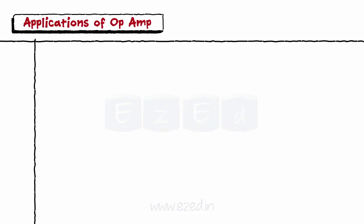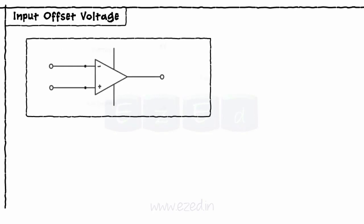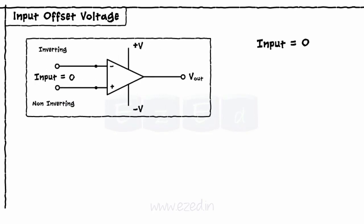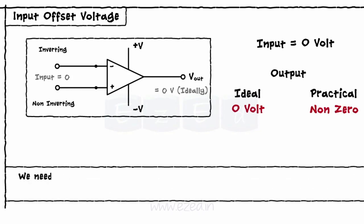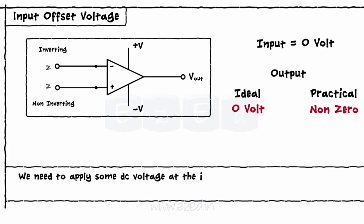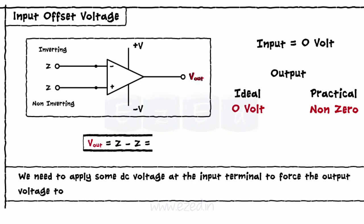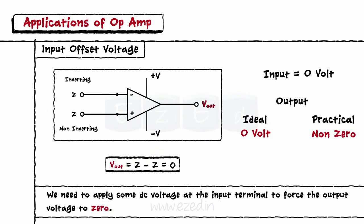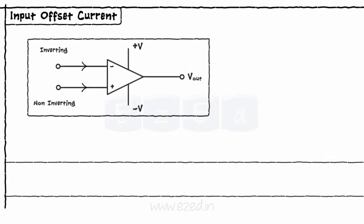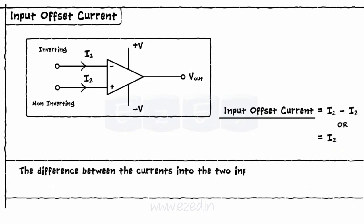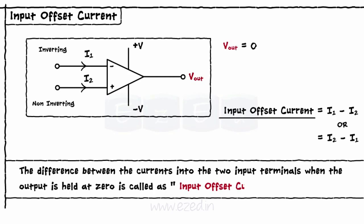The fourth term is input offset voltage. When input to an op-amp is zero, the output should ideally be zero. But if it's not zero, we need to apply some DC voltage at the input terminal to force the output voltage to be zero. This applied voltage is called the input offset voltage. The next term is input offset current — the difference between the currents into the two input terminals when the output is held at zero.